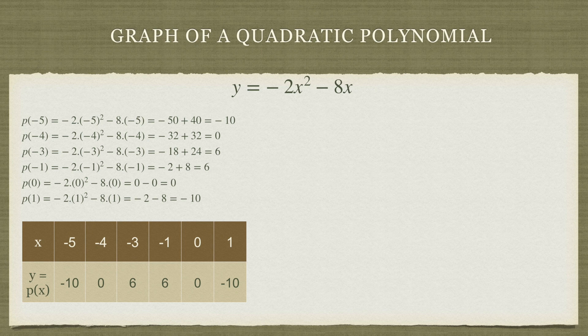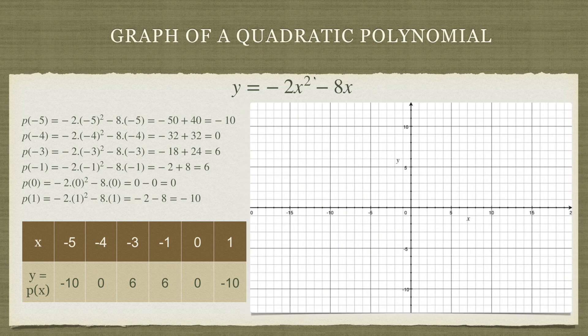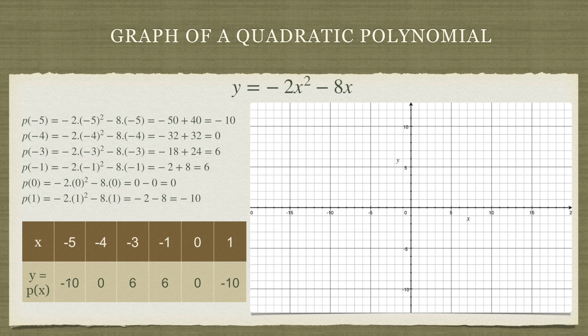Now let's plot these points on our graph paper. The first point is here, minus 5, minus 10. Then we have minus 4, 0, minus 3, 6, and so on and so forth.